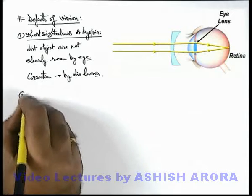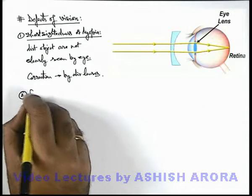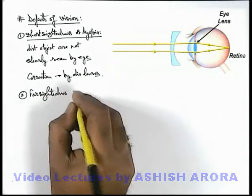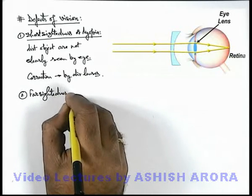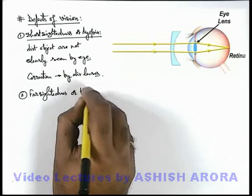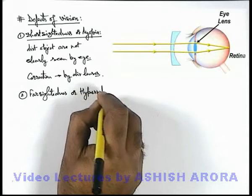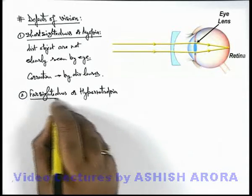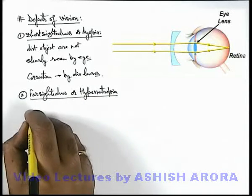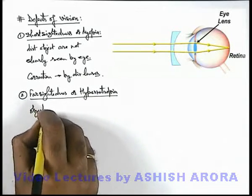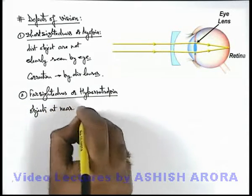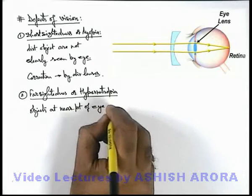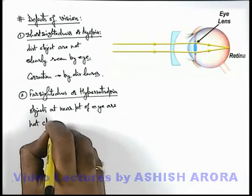Similar to this, another very common eye defect is far-sightedness, also called hypermetropia. This is the eye defect in which objects at the near point of the eye — objects which are close to the eye — are not clearly seen by the human eye.